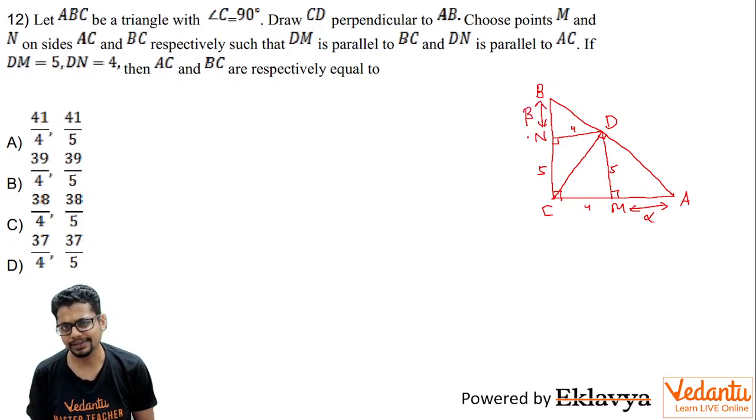And I'm interested in alpha and beta because ultimately what I want is the length AC and BC. So AC is 4 plus alpha and BC is 5 plus beta.